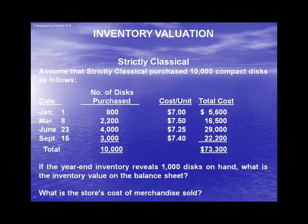Our example is going to be strictly classical. They purchased 10,000 compact discs over the course of a year in four different purchases, each with differing numbers of discs and each at a different cost per unit. If the year-end inventory reveals 1,000 discs on hand, what is the inventory value on the balance sheet? And also, what is the store's cost of merchandise sold?